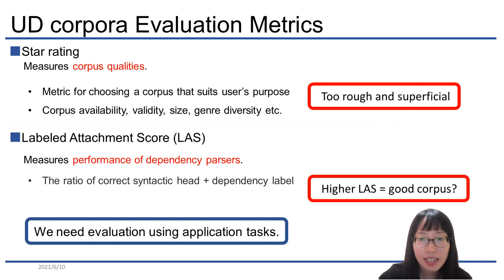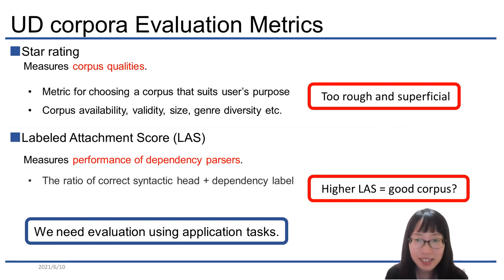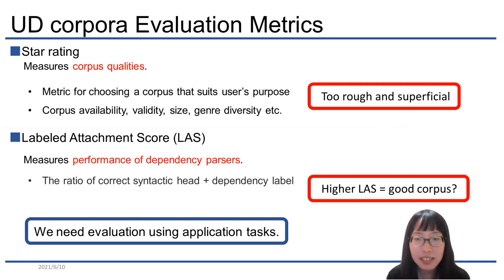The labeled attachment score (LAS) is a measure of the performance of dependency parsers trained using the corpus. But does a higher LAS of a dependency parser really mean the UD corpus used for training is good? When the corpus is more consistent, the LAS will show a higher score. However, when the corpus gets more precise annotation, the LAS may decrease. Therefore, by analyzing corpus through application tasks, we can evaluate the corpus from a different perspective.